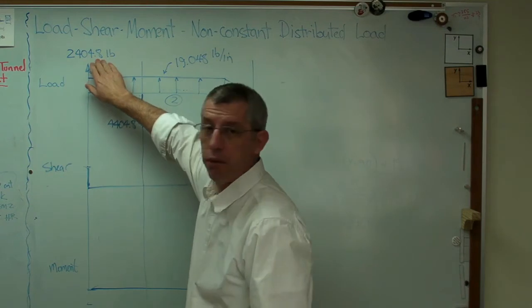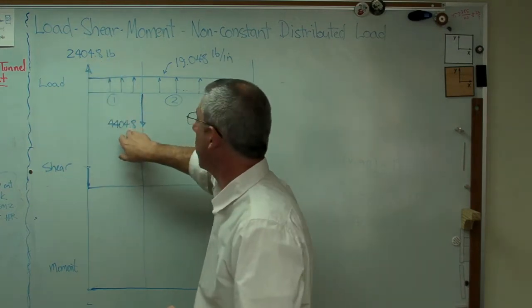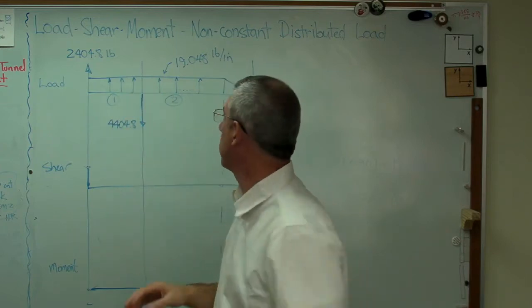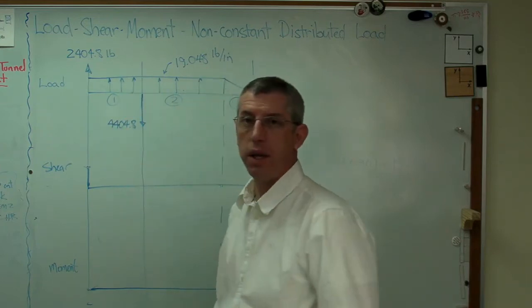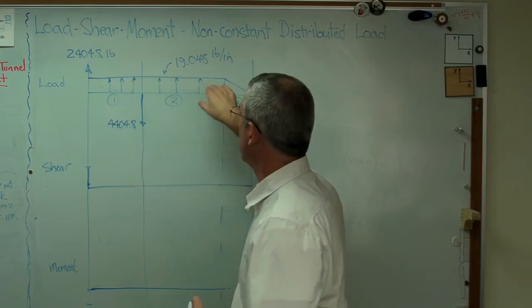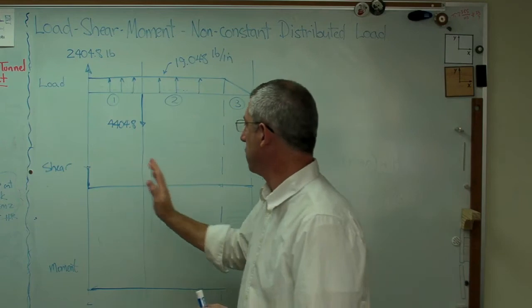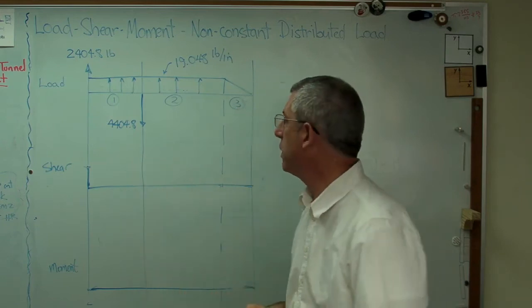Right, so right now we've got the reaction force at the root. We've got the reaction force where the strut hooks on. These are the vertical components. There are horizontal components. And we know the height of the distributed load across here. Now I've divided these into sections one, two, and three, because the load shear moment diagram is now going to have three segments in it.